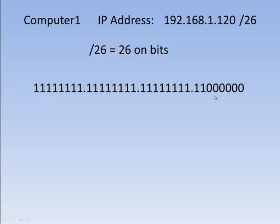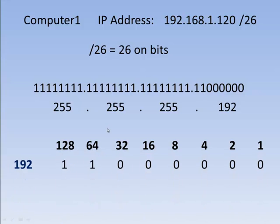That equals the 26. So whenever you're trying to figure out a range problem, the first thing you always have to do is figure out what the subnet mask is, because every subnet mask has its own unique set of ranges. All bits turned on equals 255, 255, 255, and then 192. The first two bits on equal 192 — if 128 is on and 64 is on, that equals 192. So Computer1's IP address is 192.168.1.120 with a subnet mask of 255.255.255.192.